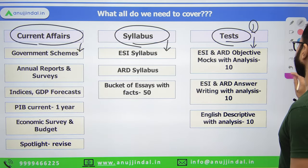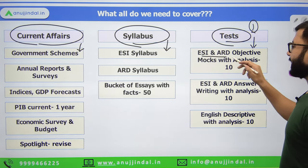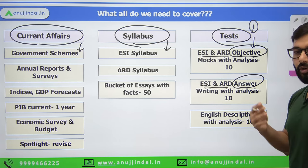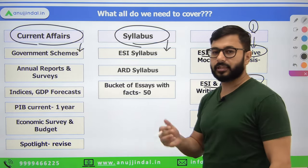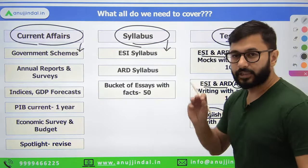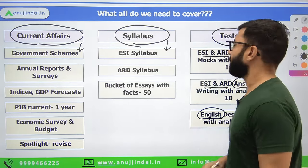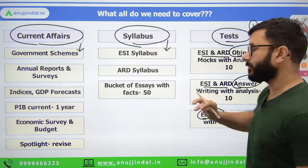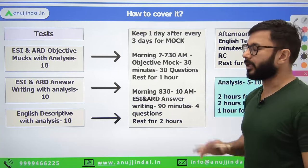I want to start with tests instead of starting with syllabus or current affairs. Tests can be divided into three major portions: first is ESI and ARD objective test, second is ESI and ARD descriptive or answer writing test, and third is English essay writing or English descriptive writing test. These three types of tests you have to write in the next 30 days. Let's come to test first and go in depth, then I'll come back to syllabus and current affairs.